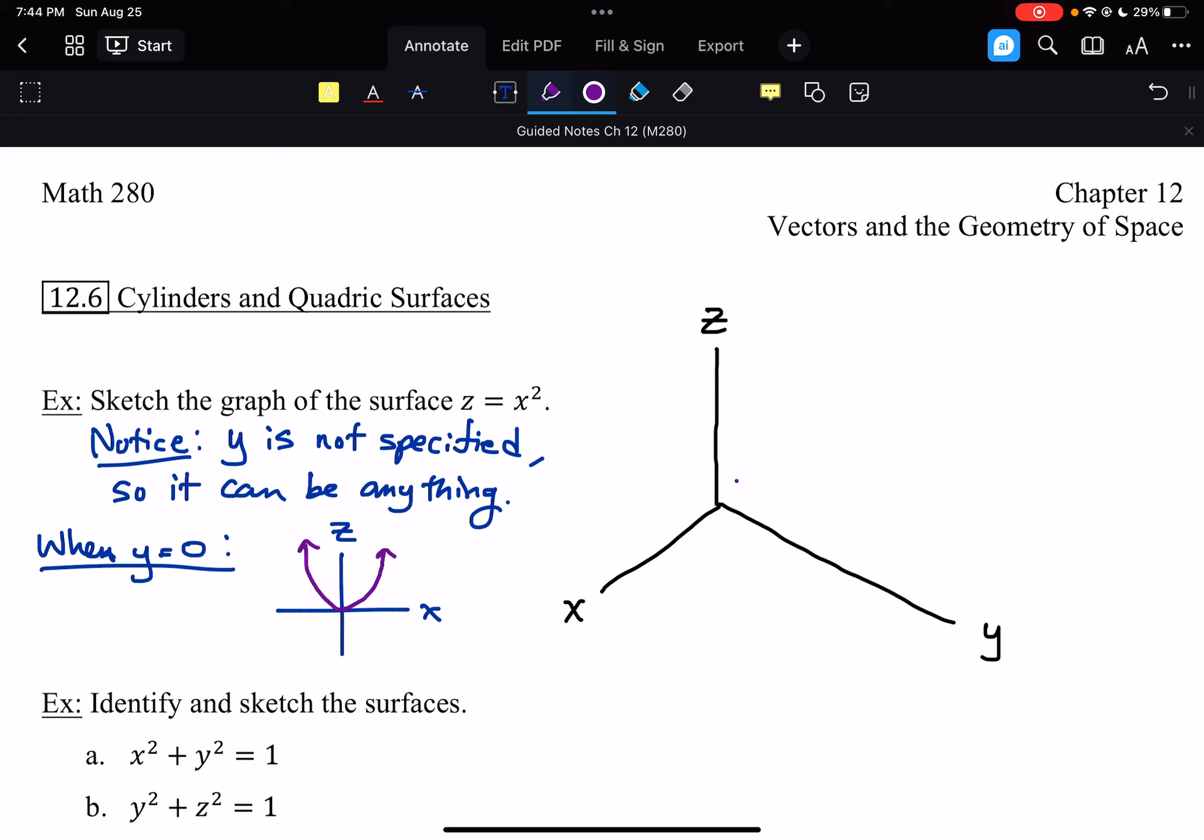So if we kind of transplant this onto this 3D surface here, so XZ plane, we're going to have our parabolic curve kind of right there. And then if you go up to the next value, technically it's at every value in between also, but just for the sake of argument, something like that. And then you go up to the next one. And you just keep going.